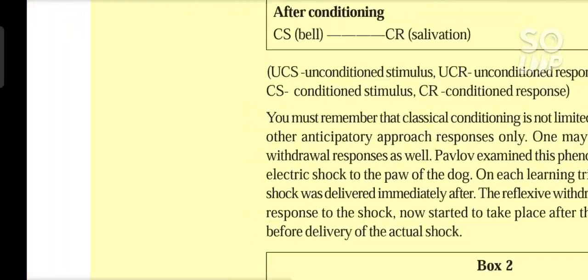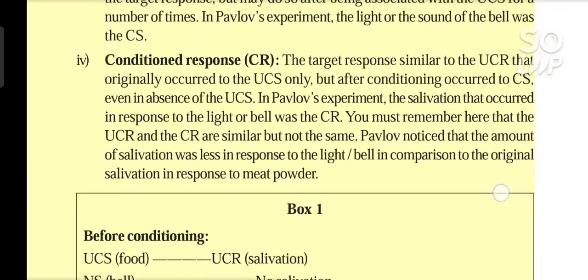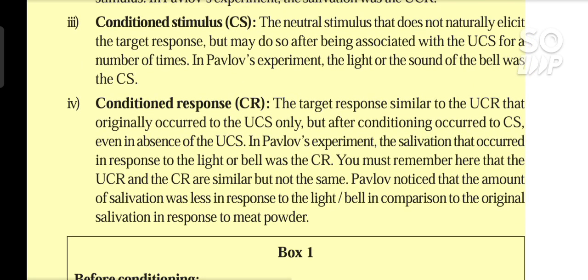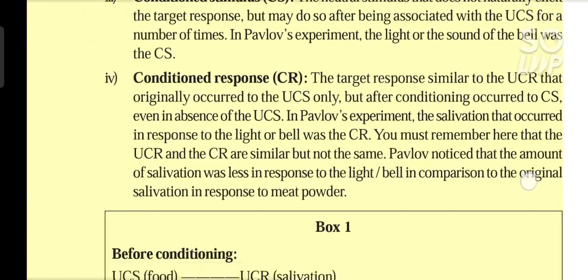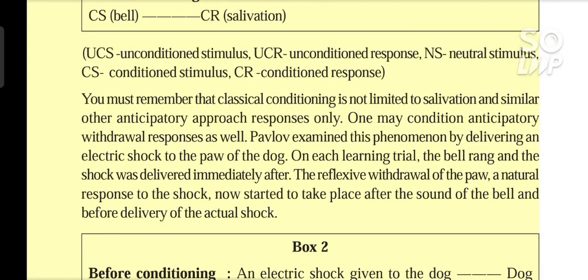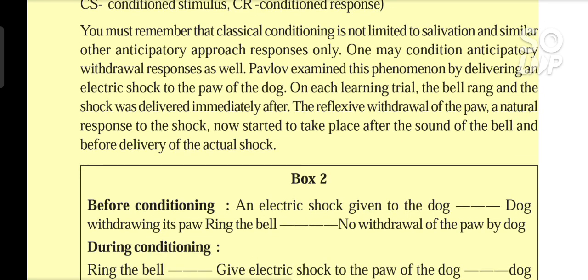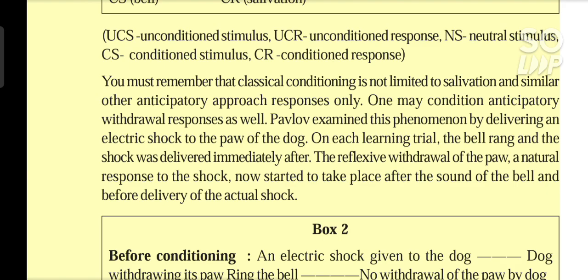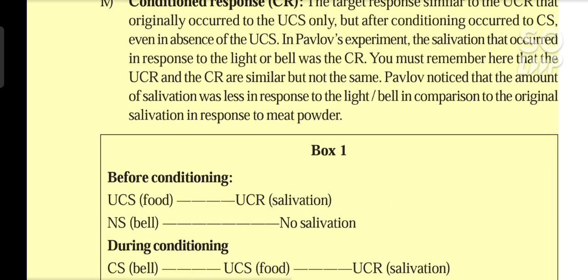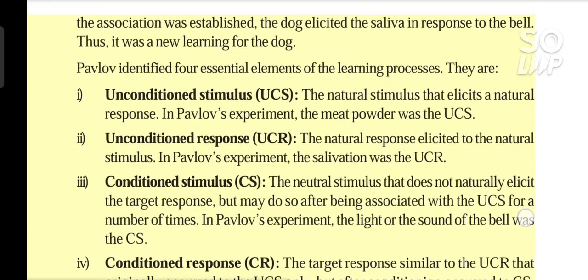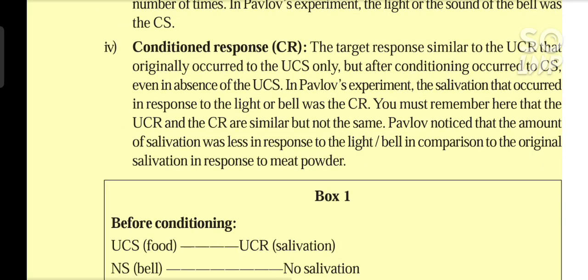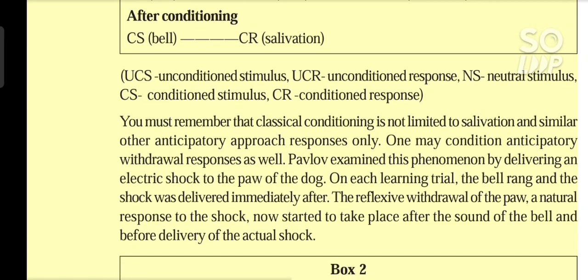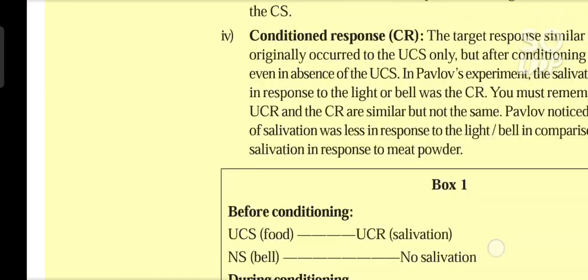Pavlov identified four essential elements of the learning process. First, the unconditioned stimulus (UCS): the natural stimulus that elicits a natural response — in Pavlov's experiment, the meat powder was the UCS. Second, the unconditioned response (UCR): the natural response elicited to the natural stimulus — in Pavlov's experiment, the salivation was the UCR. Third, the conditioned stimulus (CS): the neutral stimulus that does not naturally elicit the target response, but may do so after being associated with the UCS a number of times — in Pavlov's experiment, the light or sound of the bell was the CS. Fourth, the conditioned response (CR): the target response similar to the UCR that originally occurred to the UCS only, but after conditioning occurred to the CS even in absence of the UCS — in Pavlov's experiment, the salivation that occurred in response to the light or bell was the CR. You must remember that the UCR and the CR are similar but not the same. Pavlov noticed that the amount of salivation was less in response to the light or bell in comparison to the original salivation in response to meat powder.